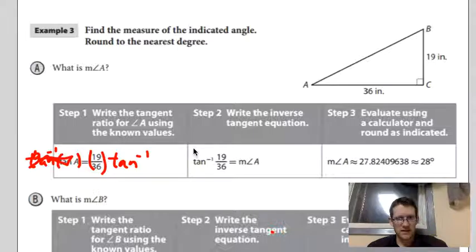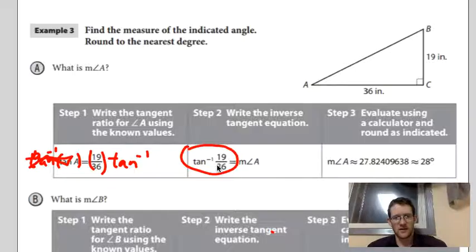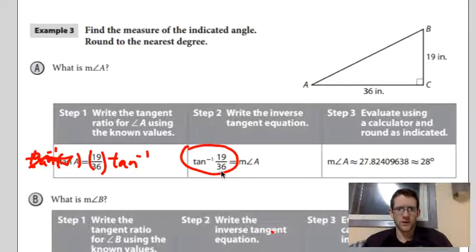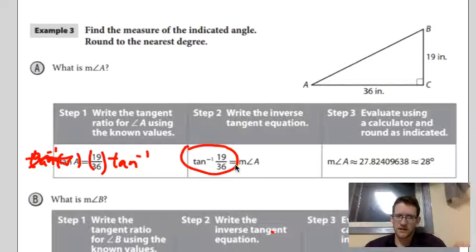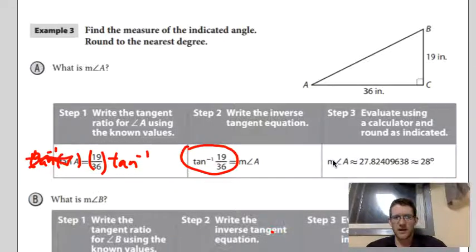This is something we can plug into our calculator. 19 divided by 36, and then hit the inverse tangent button for most iPhone calculators. Otherwise, you may have to do inverse tangent, and then 19 divided by 36 in parentheses, something like that. But plug it in, you can get a value. We'll try this other one here.